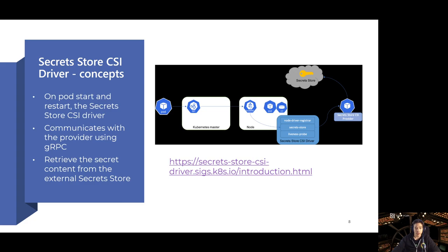About the Secret Store CSI driver: the CSI Secret Store is specifically a Container Storage Interface to provide access for secret providers in the Kubernetes environment. These secret providers are not necessarily dedicated to Kubernetes — they may serve other environments. By using the CSI Secret Store driver, we create a connection between the secret store provider and Kubernetes. It works with gRPC, and secrets are retrieved from the external secret store transparently through Kubernetes objects.